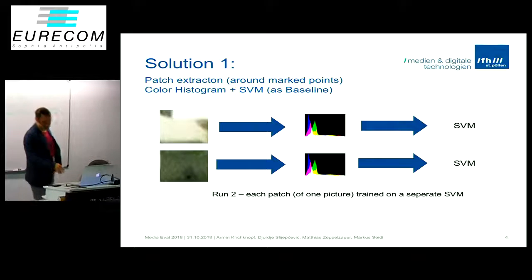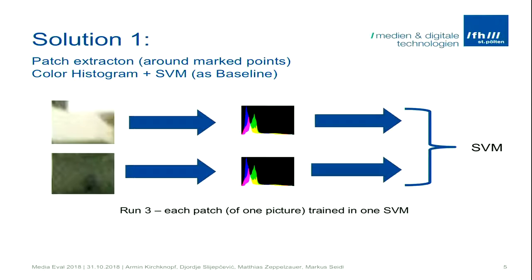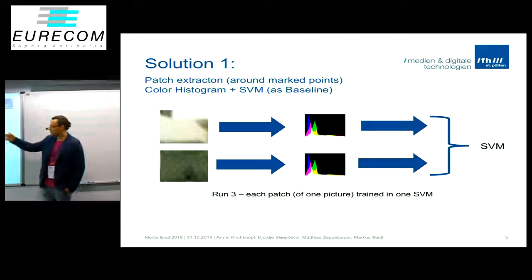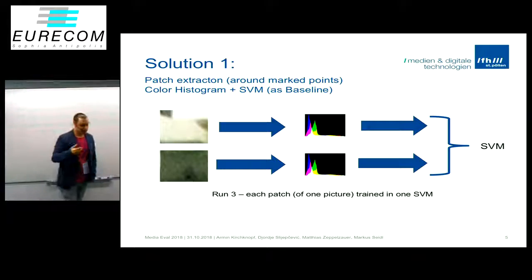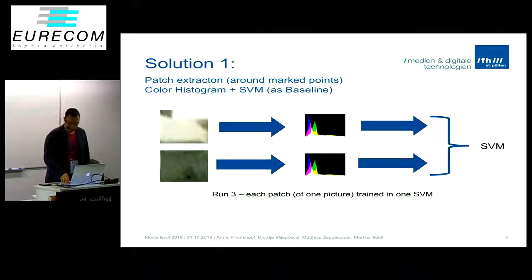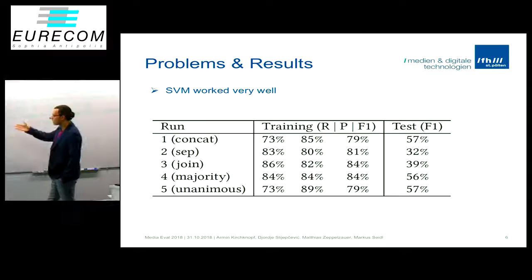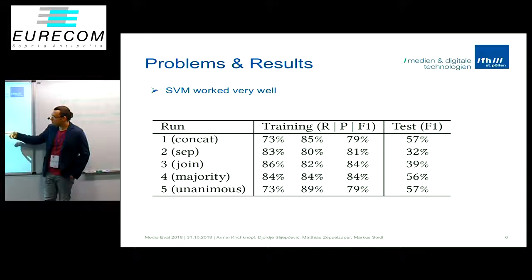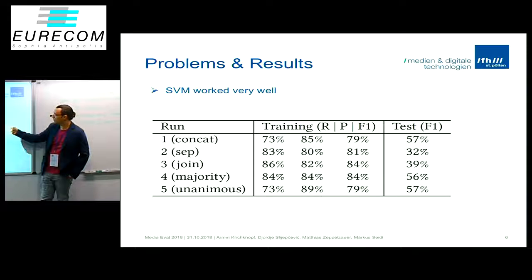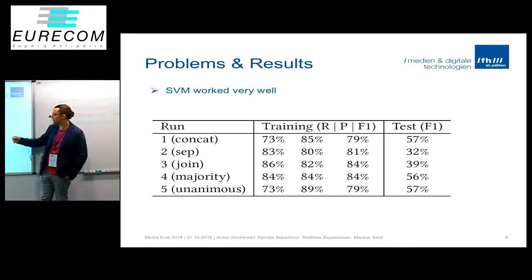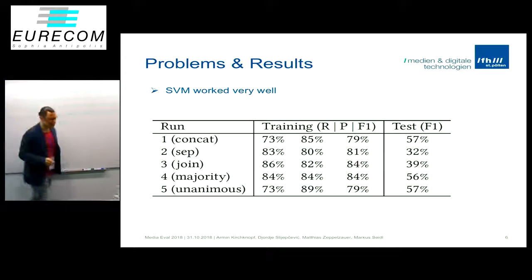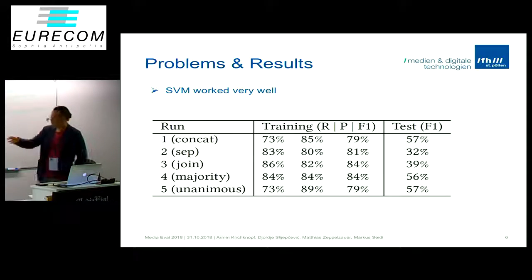Our results will be shown in some of the next slides. The second run consisted of two separately trained SVMs on each histogram. The third run was also extracting the histograms of each patch but trained on only one SVM, so we could see if these different methods result in different outcomes. As you can see, our first three runs — concatenation, separation, and joining of histogram features — resulted in different scores. The first run performed well at around 57%, and runs four and five with majority voting and unanimous voting were also around that level.